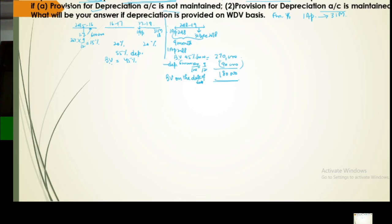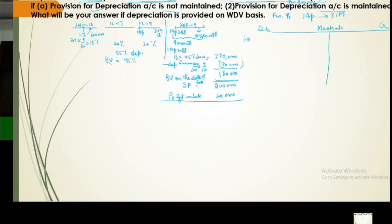Now the sale is on 31st December 2018. Current year depreciation: 20% of 6 lakh for 9 months = 90,000. Book value on date of sale: 2,70,000 minus 90,000 = 1,80,000. Selling price — suppose it's given as 2 lakh rupees. So profit on sale = 2,00,000 minus 1,80,000 = 20,000.